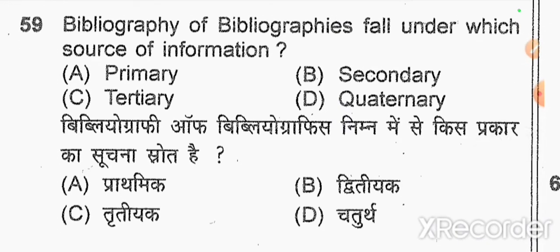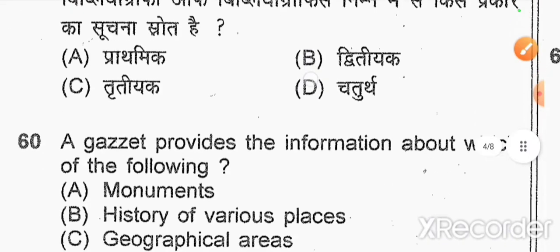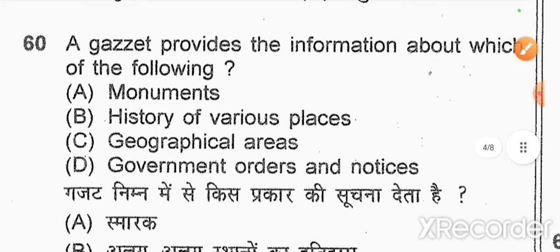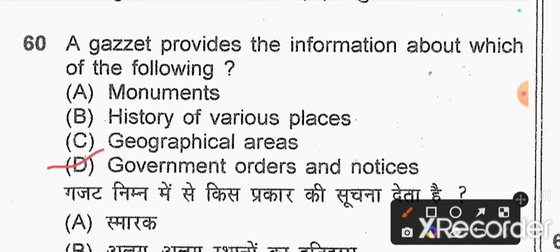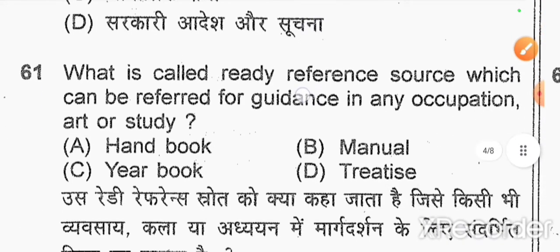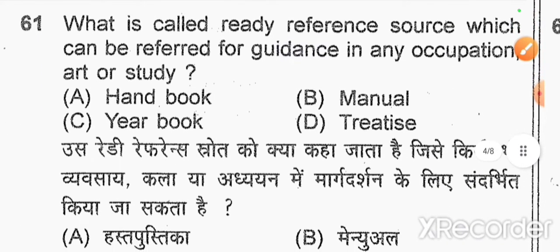Option C. Question number 60: a gazetteer provides information about which of the following — option D — government orders and notices. Question number 61: what is called a ready reference source which can be referred for guidance in any occupation, art, or study? Option B — manual.